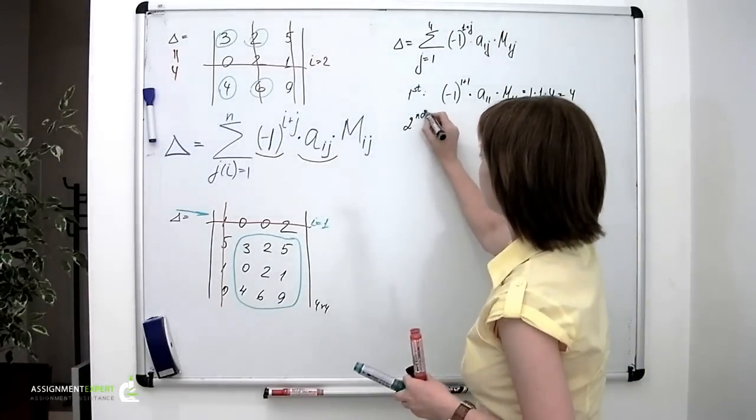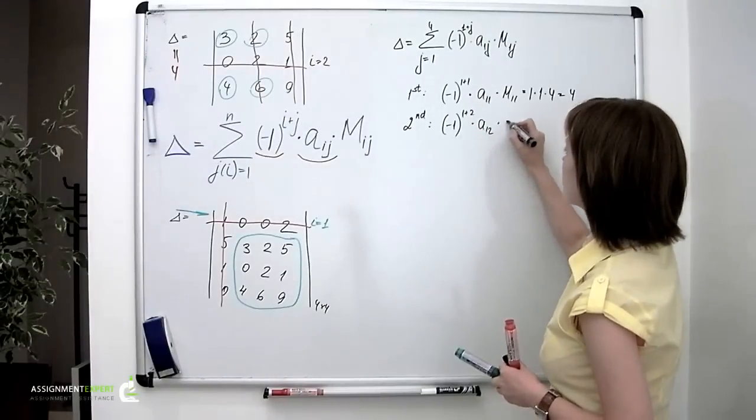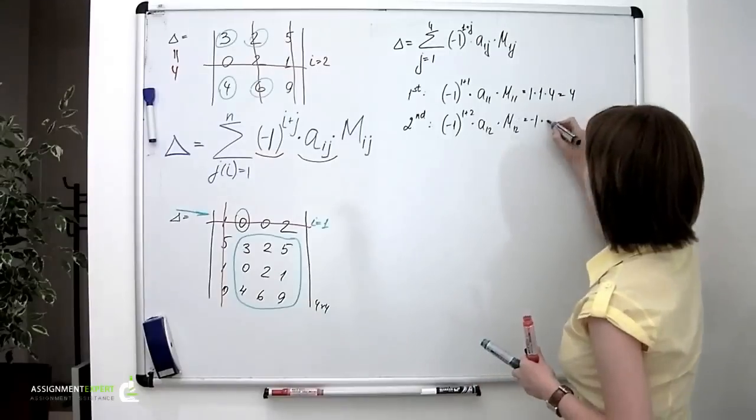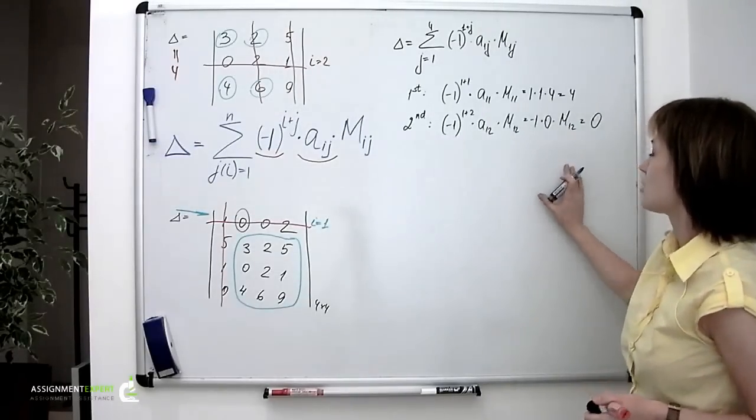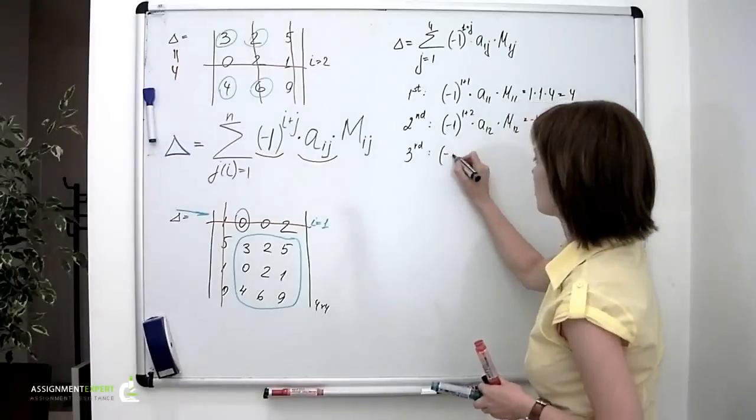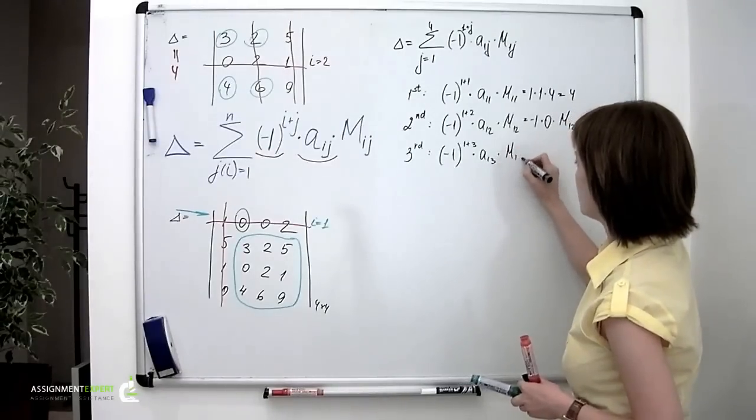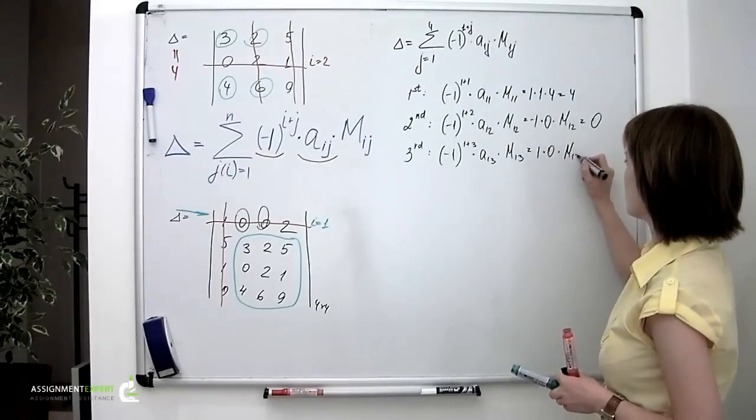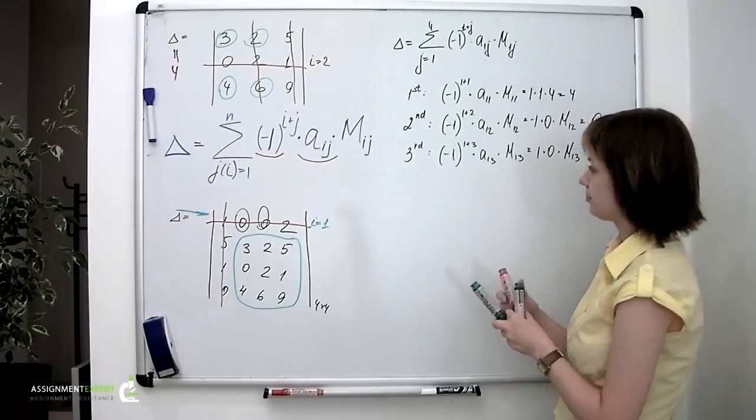And now the second summand: minus 1 to the power of 1 plus 2 times a_1,2 times M_1,2. Minus 1 times 0 and times M_1,2, which is 0, because this summand contains 0, and it's useless to calculate this minor. And then the third summand: minus 1 to the power of 1 plus 3 times a_1,3 times M_1,3. Times M_1,3, 1 times 0 again and times M_1,3. And again we have 0, and we don't have to calculate M_1,3 as well.